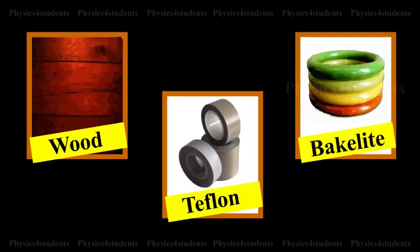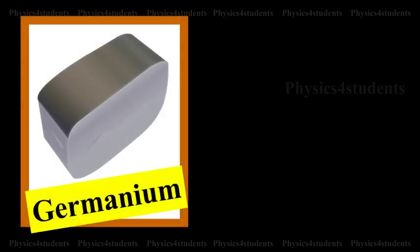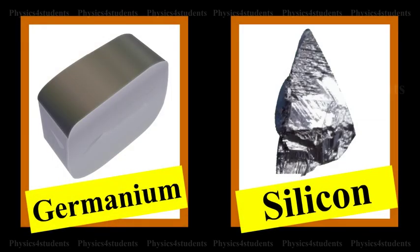In between these two classes of materials are the semiconductors. They are partially conducting. The resistivity of a semiconductor is 10⁻² to 10⁻⁴ ohm meter. Examples: Germanium, Silicon.